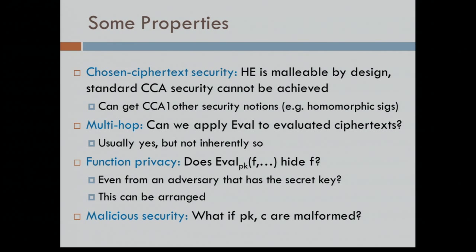Function privacy: suppose it's not Alice who chooses the function to compute — it's the server that decides what it wants to compute, and Alice just gets the result. Can Alice tell what the function was? Because the size of the ciphertext doesn't grow with the complexity of F, there is clearly some loss of information. The constructions we have don't necessarily come with function privacy, especially not when you care about malicious security where Alice's public key or the ciphertext was malformed. In the honest-but-curious setting, it's usually easy to get function privacy out of the constructions we have.